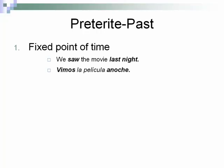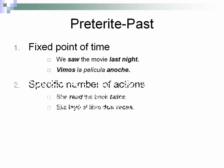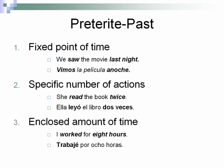So the rules first. The preterite tense is a fixed point of time. So 'we saw the movie last night' would be: Vimos la película anoche. It's also a specific number of actions — 'she read the book twice': Ella leyó el libro dos veces. And an enclosed amount of time — 'I worked for eight hours': Yo trabajé por ocho horas.